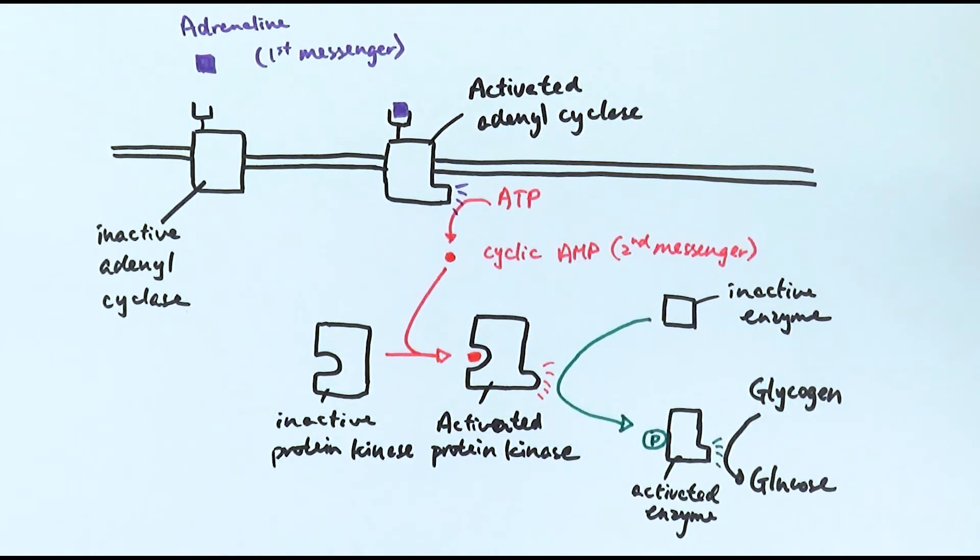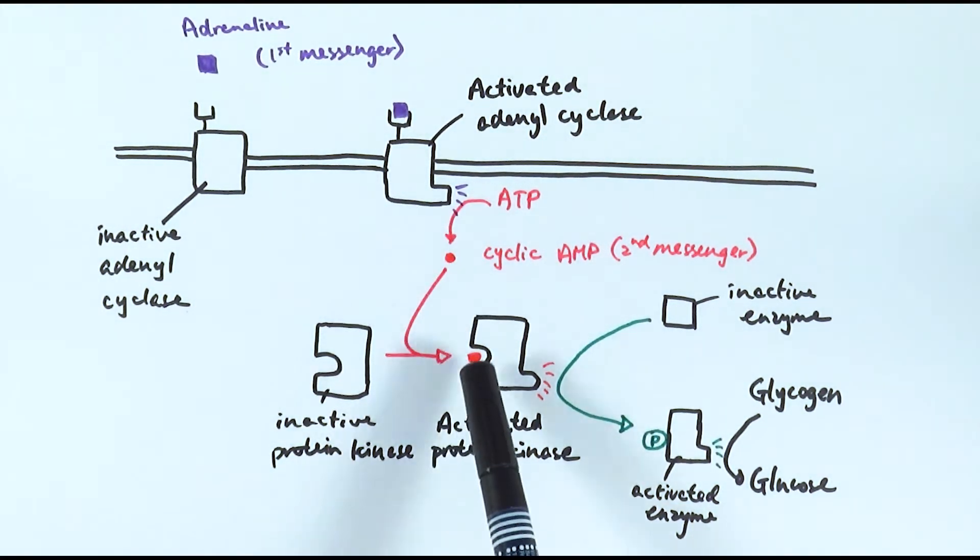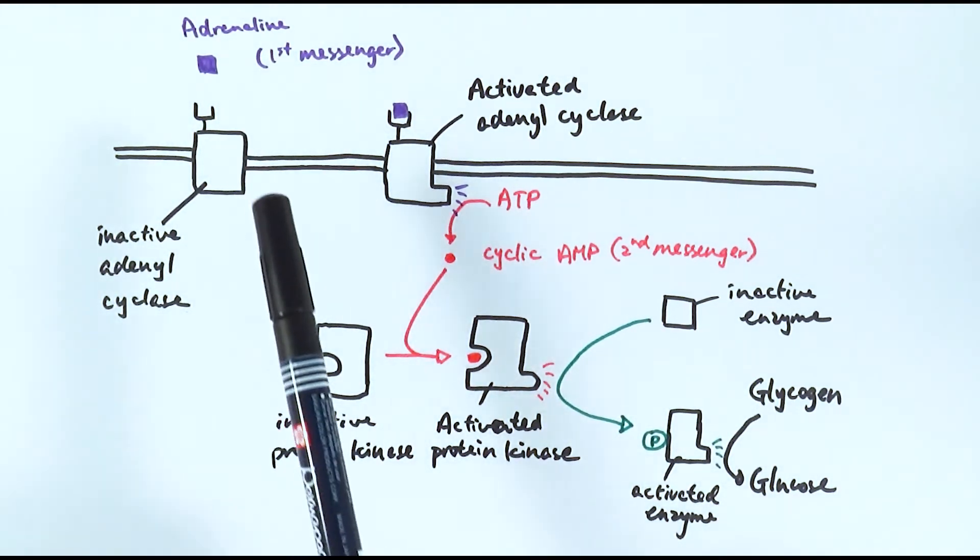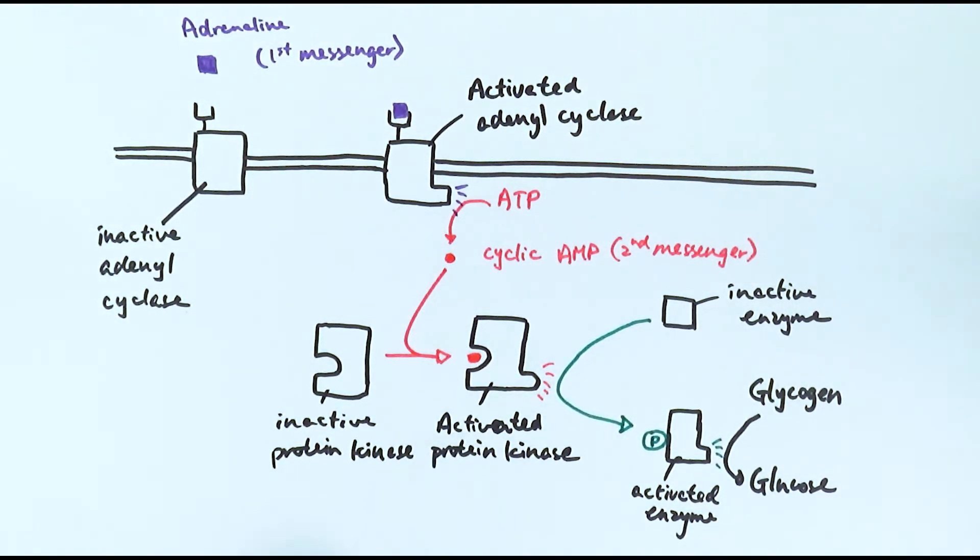What we mean by an enzyme cascade is the fact that you can see one enzyme activates another enzyme and then it will activate another enzyme. This is what we mean by cascade.